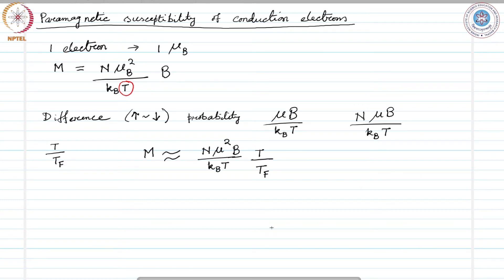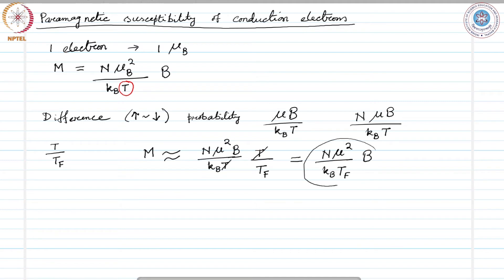It is not n number of electrons that contribute, but n times T over T_F that number of electrons contribute. Cancelling T, we arrive at n μ² over k_B T_F times the magnetic field. This expression is independent of temperature, since T_F is the Fermi temperature which is a constant. And this is also of the order of magnitude that is observed from experiment.